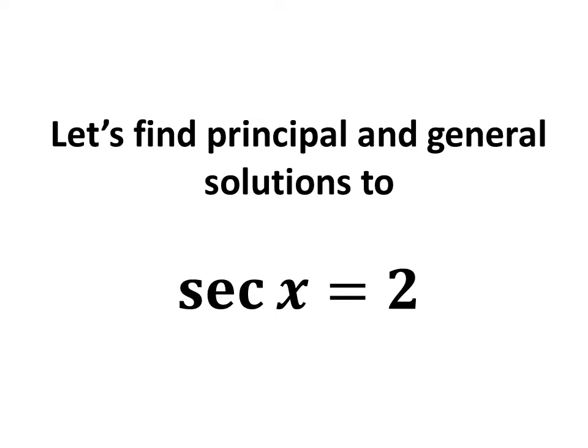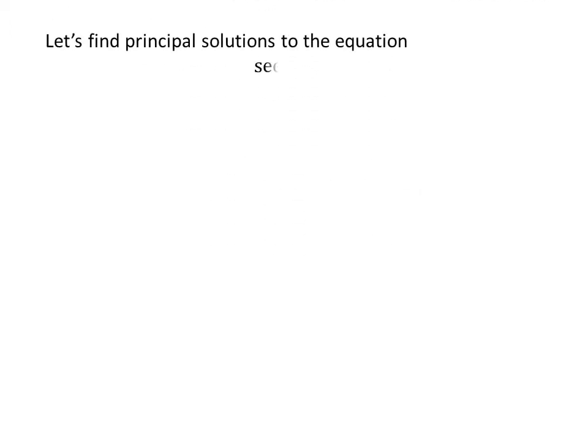In this video, we will learn to find the principal and general solutions to the equation secant of x is equal to 2. Let us first find the principal solutions. The principal solutions are those for which x is greater than or equal to 0 and less than 2 times pi.